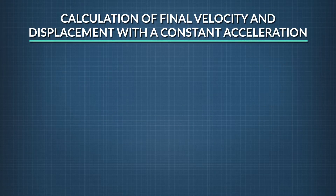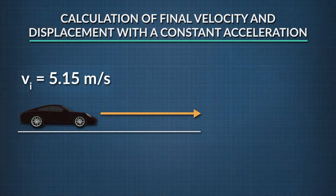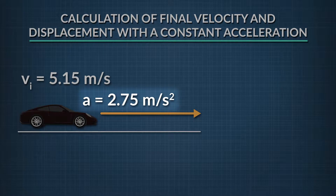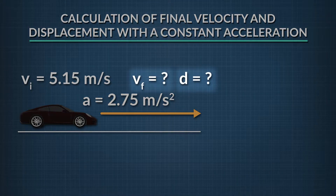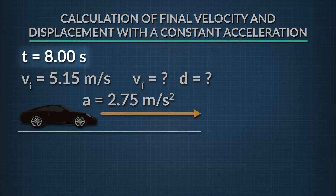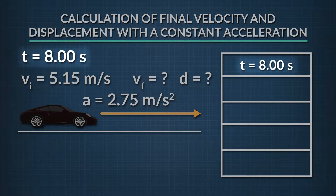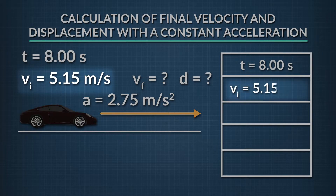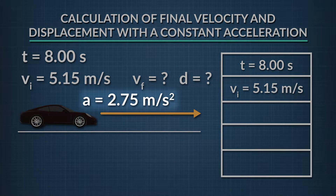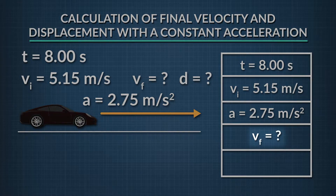Our next problem involves a kinematic calculation involving velocity and displacement while there is a constant acceleration. A car with an initial velocity of 5.15 meters per second accelerates uniformly at a rate of 2.75 meters per second squared. Find the final velocity and the displacement after 8.00 seconds. As always, the first thing we want to do is set up a data table with all of our variables. The time was given as 8.00 seconds, and the acceleration was constant at 2.75 meters per second squared. We need to solve for final velocity as well as displacement.